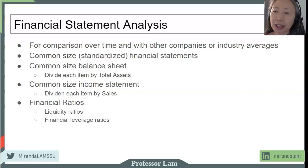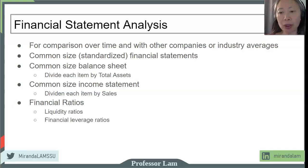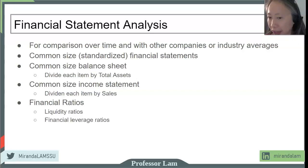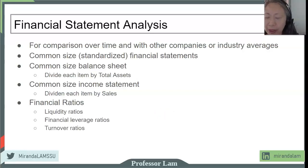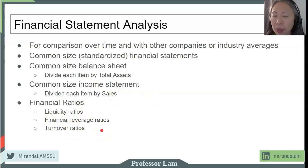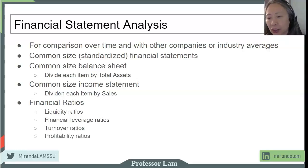The next group is financial leverage ratios, which looks at the long-term financial health of the firm — the ability of the firm to meet its debt obligations over time, maybe a year, three years, or five years. Next, we look at turnover ratios, also referred to as efficiency ratios, which measure how effectively the firm is using its assets. Then the next ratio is the profitability ratio — how profitable is the firm — which is obviously very important.